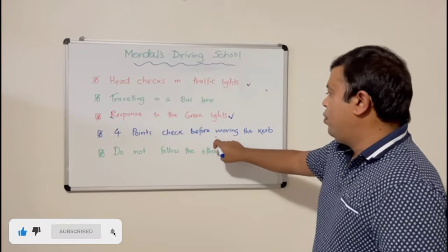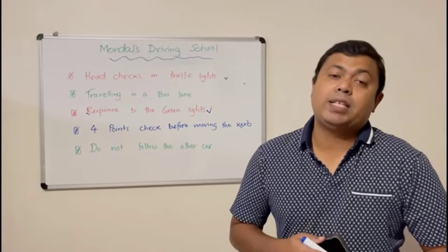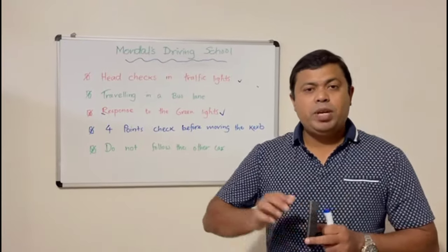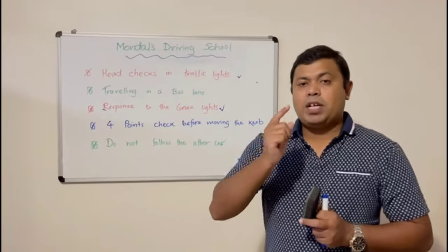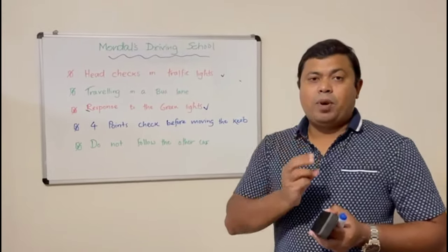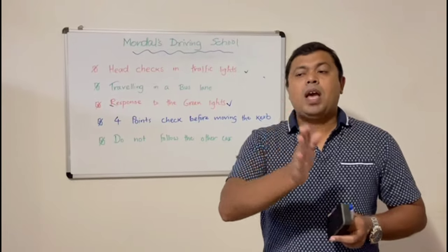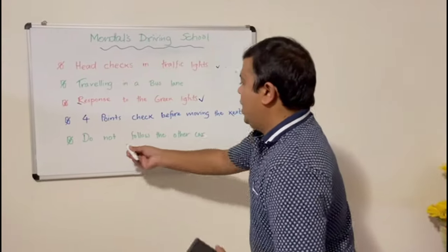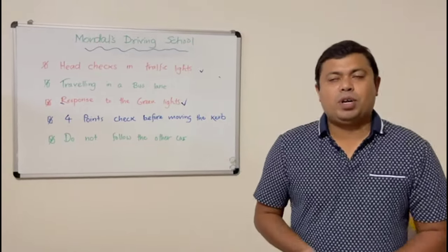Number four is the four-point check before moving the car. Normally, roadside parking is a compulsory item in Australia. When you move the car, make sure you indicate for five seconds, then check: first point — the rear vision mirror; second point — the right-hand side mirror; third point — the right blind spot; fourth point — look front. Then you can go.